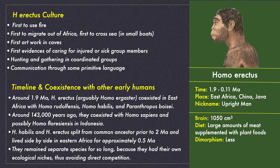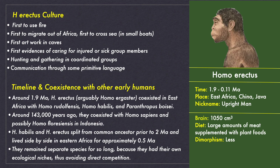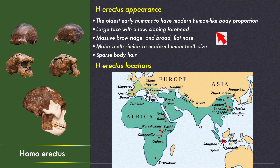Homo erectus were one of the most important early human species for several reasons — there are many firsts associated with them. They were the first species to use fire, the first to migrate out of Africa, and probably built the first boats to cross the sea to reach Java. The first artwork in caves is also attributed to them, and there are strong evidences suggesting care for sick members in their group. They were the longest-living human species, surviving for more than one and a half million years — compared to Homo sapiens who have lived for only 0.3 million years. They coexisted with Australopithecus and Paranthropus early on, and even coexisted with Homo sapiens before going extinct some 0.11 million years ago. Homo erectus were generally taller than us, aptly nicknamed the upright man, with a brain capacity of 1050 cubic centimeters or more, sparse body hair, and an athletic build with high endurance.